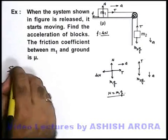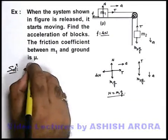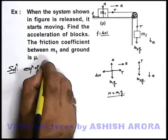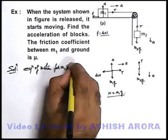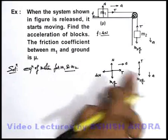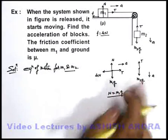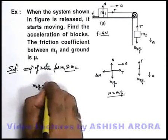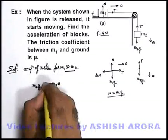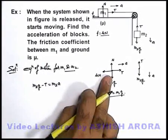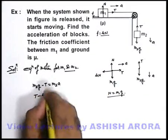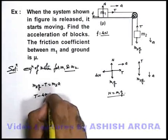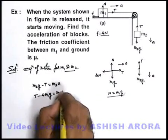Now if we just write down the equation of motion of the blocks, equation of motion for m1 and m2. As they are moving with equal acceleration we can easily write for m2 it is m2g minus T is equal to m2a. For the block m1 we can write, T minus μN, N can be written as m1g, is equal to m1a.